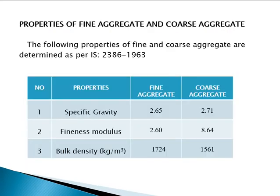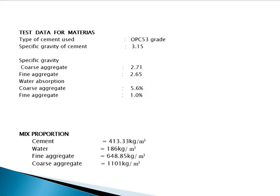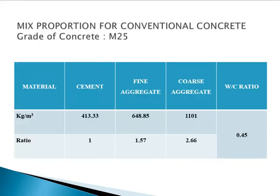Experimental Details — properties of fine aggregates and coarse aggregates. This is the test data for the materials: type of cement used, specific gravity of cement, specific gravity of coarse aggregate, fine aggregate, water absorption of coarse aggregate and fine aggregate. Mix proportions: cement 413.33 kg, water 186 kg, fine aggregate 648.85 kg, coarse aggregate 1107 kg — mix proportion for conventional concrete grade M25.